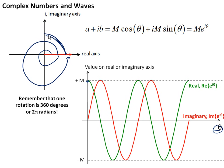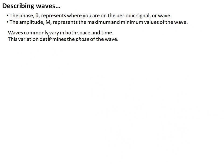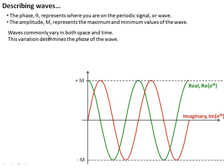We know that the magnitude, or M, is essentially the height of that wave. And so this relation is why we use complex numbers to describe waves. The phase, it turns out, represents where you are on the periodic signal of the wave, and the amplitude are the maximum and minimum values of that wave. Waves in this course are going to vary in both time and space, and this variation determines the phase of the wave.